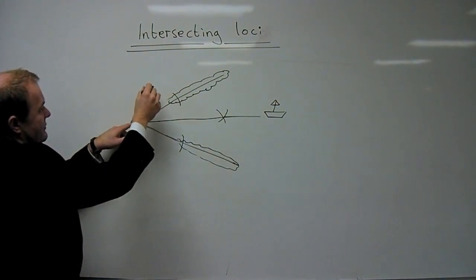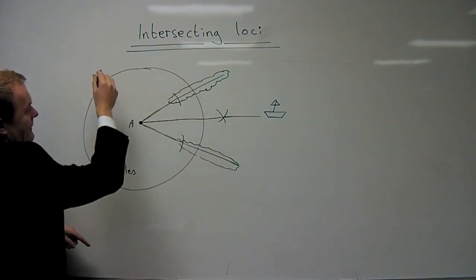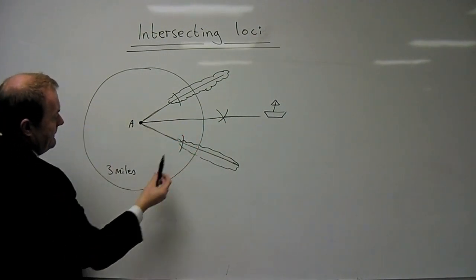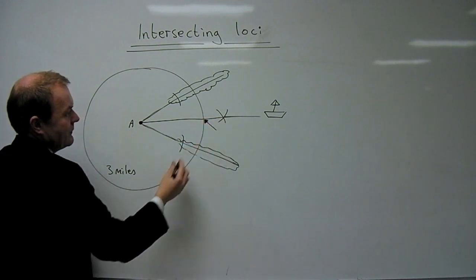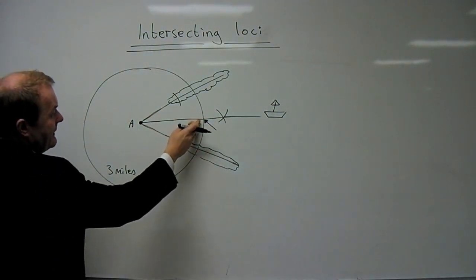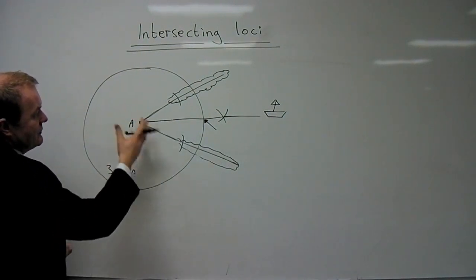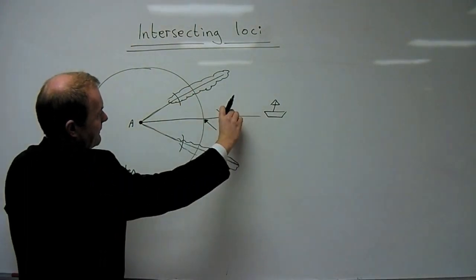And I can then draw my three-mile locus of points around my light here, and then you can identify that this is the point at which the boat will be seen, because that's precisely three miles away, and it will be seen all the way as it comes into port.